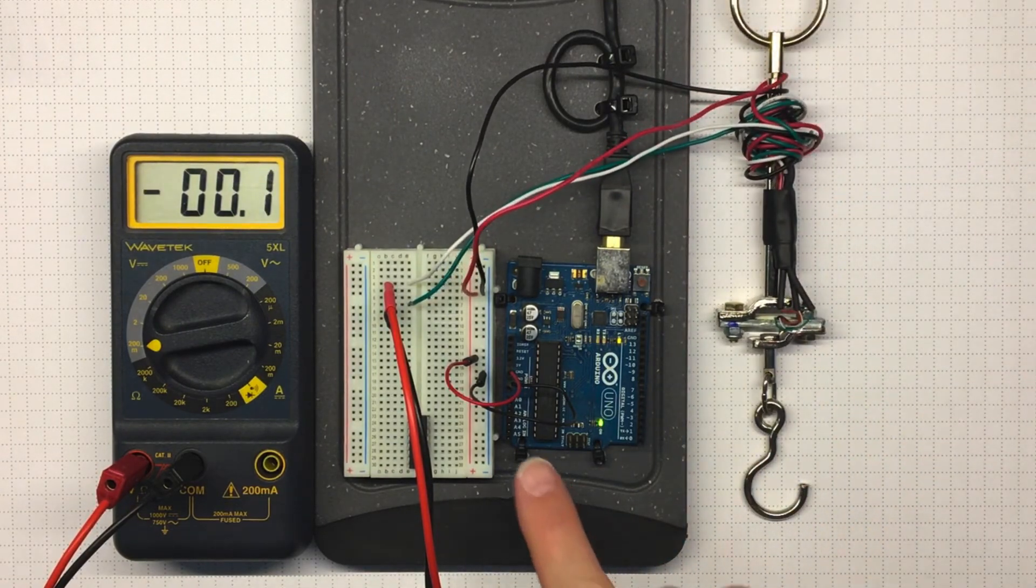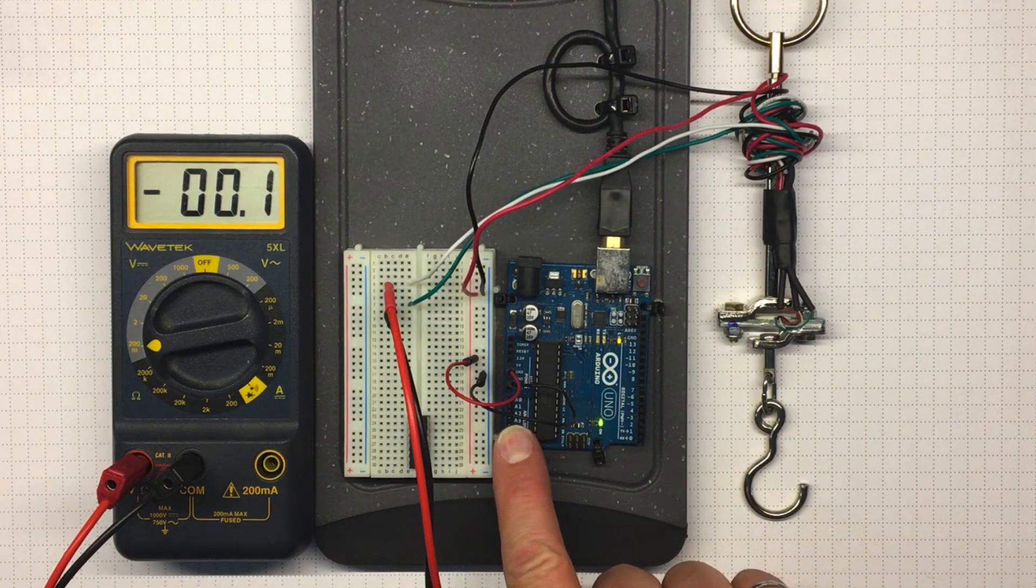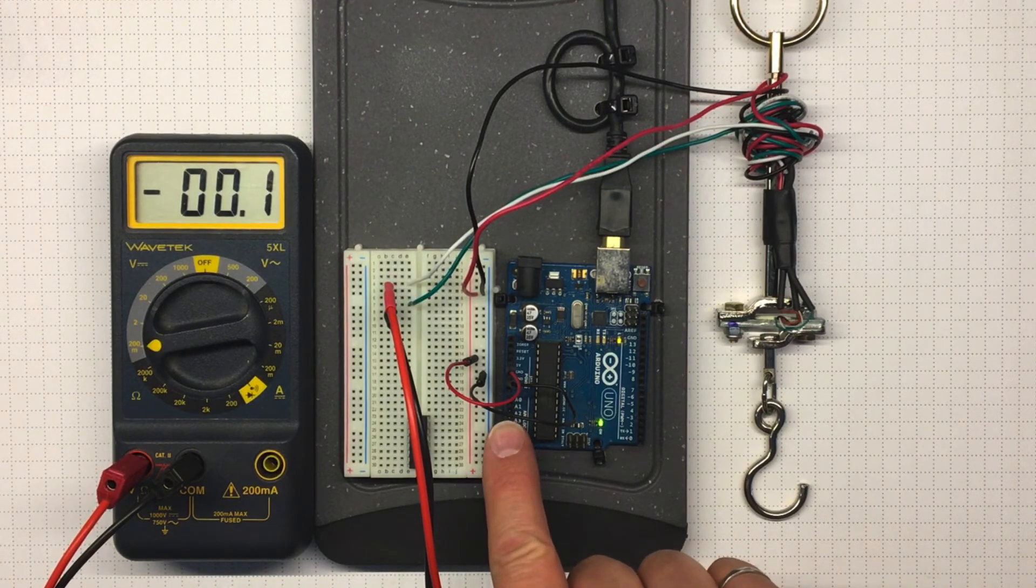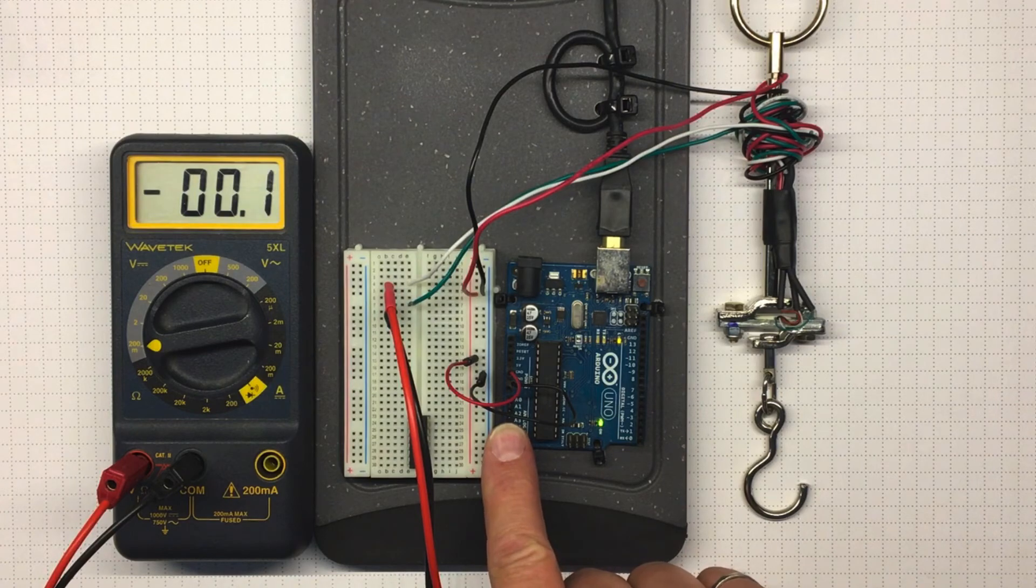That's going to be really difficult to measure with the Arduino, which is only got a resolution of about 5 millivolts. So if we want to measure with the analog inputs on the Arduino, we're going to have to somehow amplify that voltage.